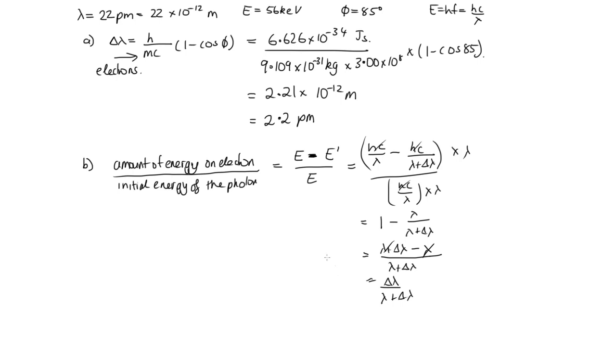And now we have everything. So lambda was 22 picometers, and delta lambda is 2.2 picometers. So now we can just substitute in. So this is 2.2 over 22 plus 2.2. Now because everything's in picometers, I don't need to worry about converting my units. Could if I wanted to, but I saved time by not doing it. So then I solve this on the calculator, and I get 0.091. And that is equal to 9.1%. I multiply by 100 to convert it to a percentage. And that's how we solve that problem.